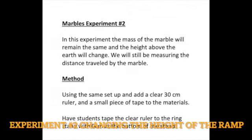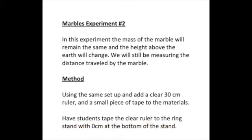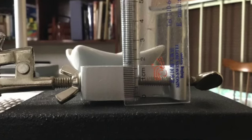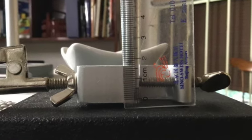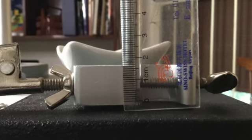Finally, experiment two. The students should design this experiment with the mass of the marble remaining the same and the height above the earth changing. They'll set up a clear ruler, tape it to the ring stand so they can measure the heights accurately.